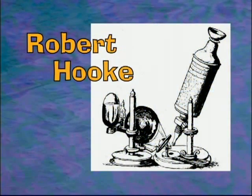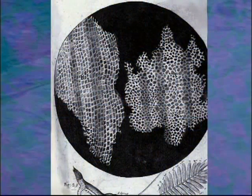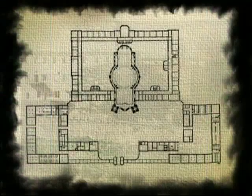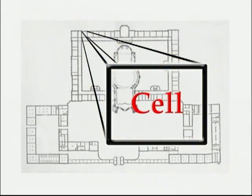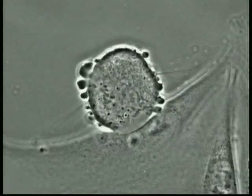He coined the term 'cells' after observing cork through a compound microscope. He thought the small boxes looked like rooms or cells in a monastery, and ever since then we've been using the term to describe the smallest unit of life.